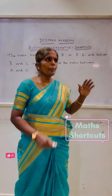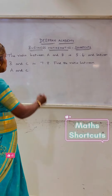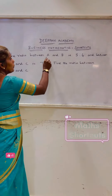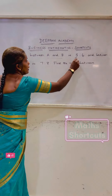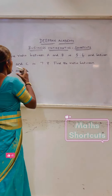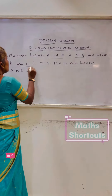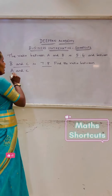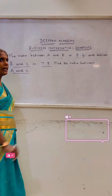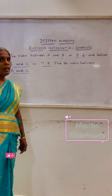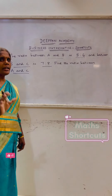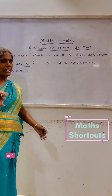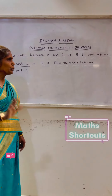Now we will look at the ratio. The ratio between A and B is 5 to 6, and B and C is 7 to 8. Find the ratio between A and C. If you use a normal method, you can use LCM. But here you can use a shortcut.